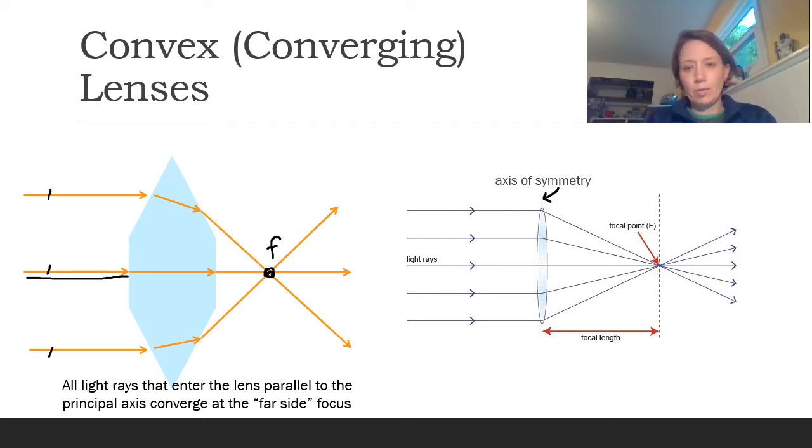Technically, the light rays bend at each surface. That's when the refraction happens. But for the rest of this unit, we're going to assume that it's one bigger bend that happens right in the middle, just for the sake of simplification of our drawings.